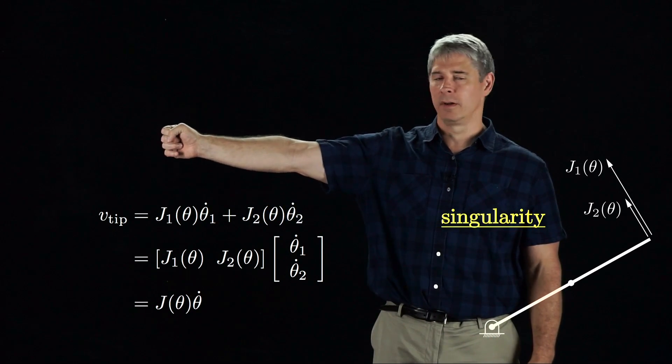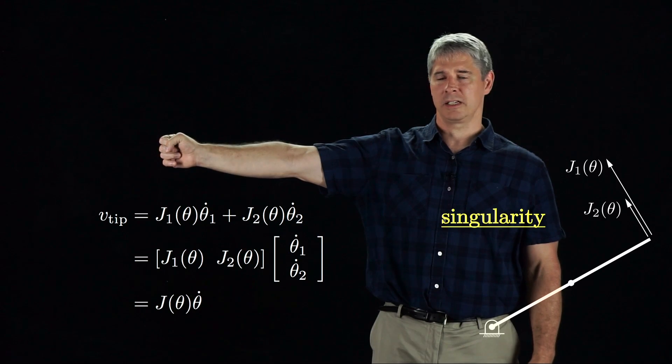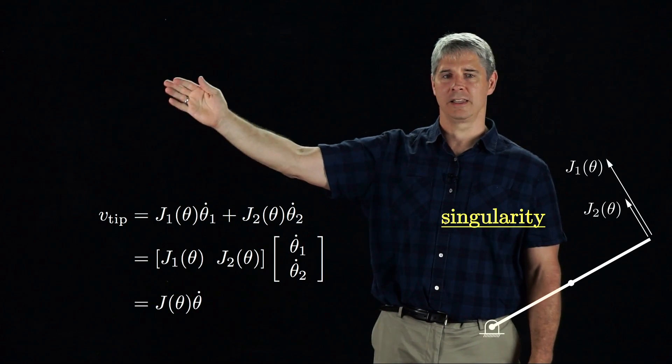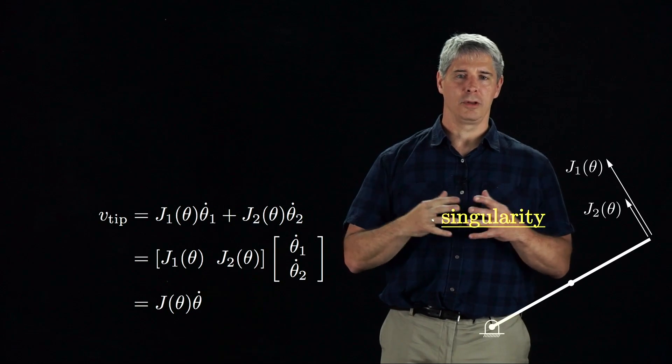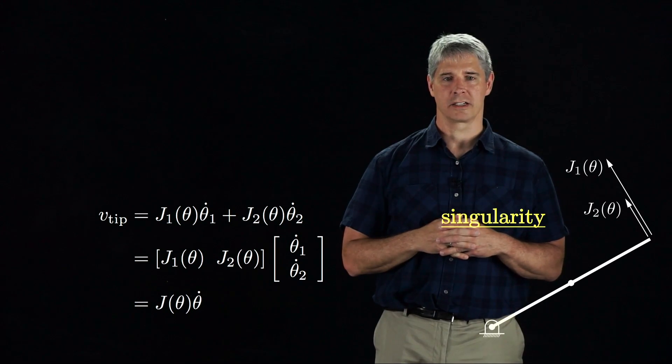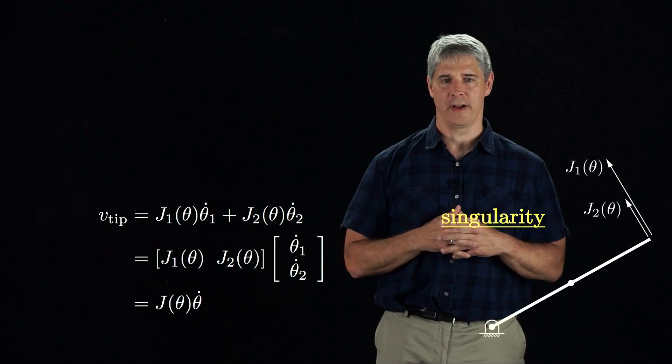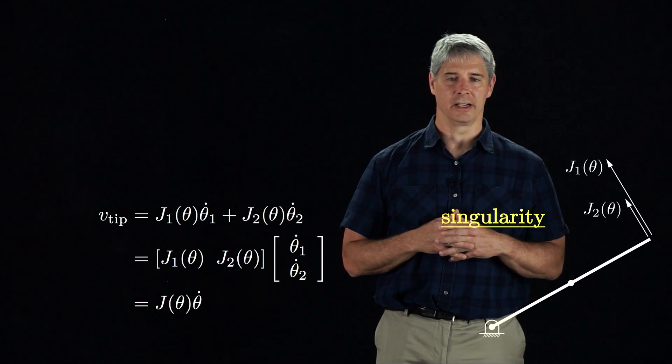I can use my arm as an example. When it's fully extended, rotation about my shoulder and about my elbow both cause the hand to move vertically. The arm loses the ability to move in some directions when the dimension of the column space of the Jacobian drops from its maximum value, and such a configuration is called a singularity.